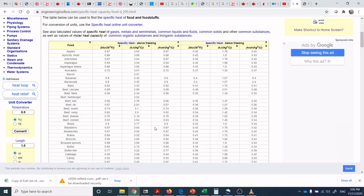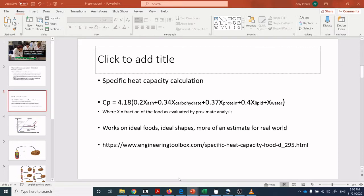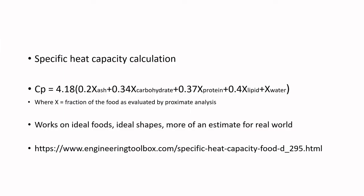Each food has a different specific heat. This specific heat calculation does take into account fractional composition, and water has a dominant effect — it's the largest macronutrient in most food products, and it also takes more energy to heat water by one degree. So water proportionately has the most impact on specific heat, followed by lipid to a lesser extent, then protein, then carbohydrate, and ash contributes the least to the heating profile.